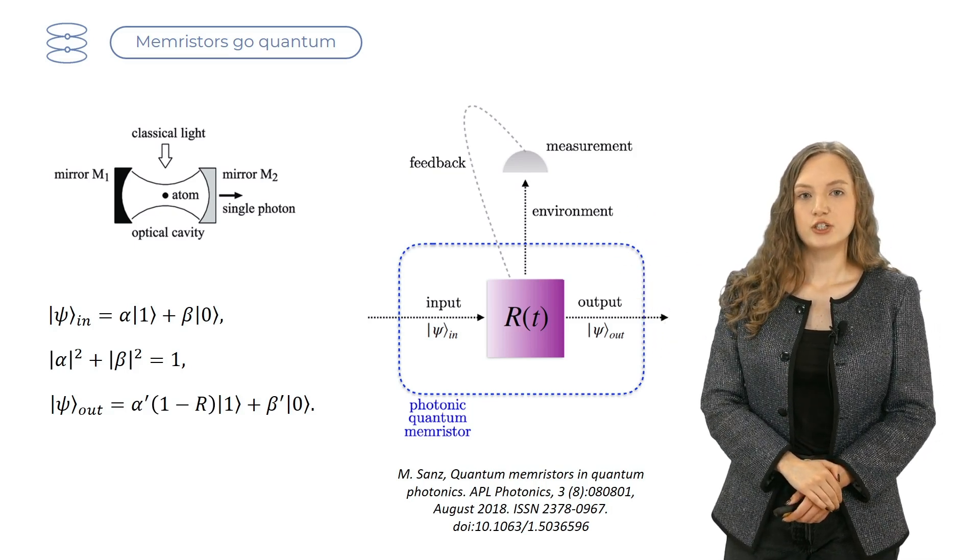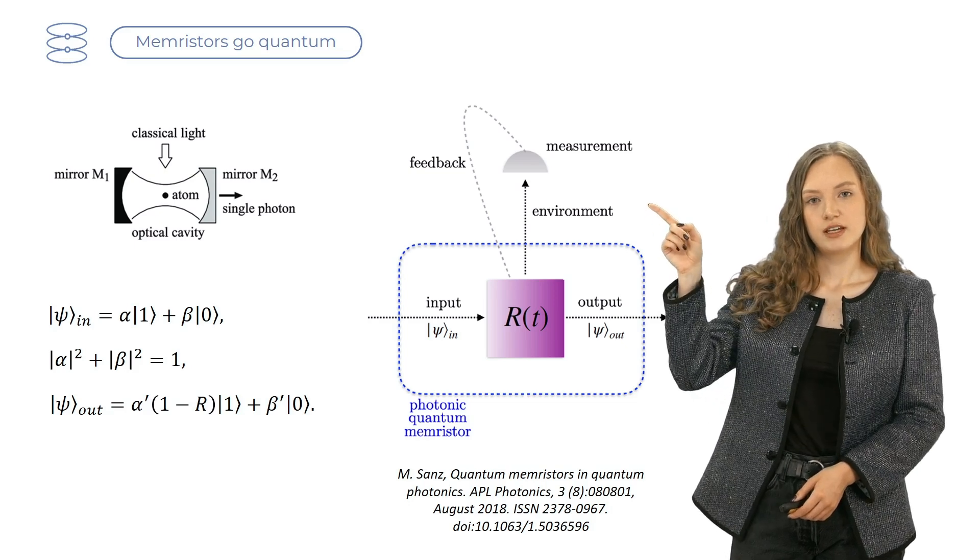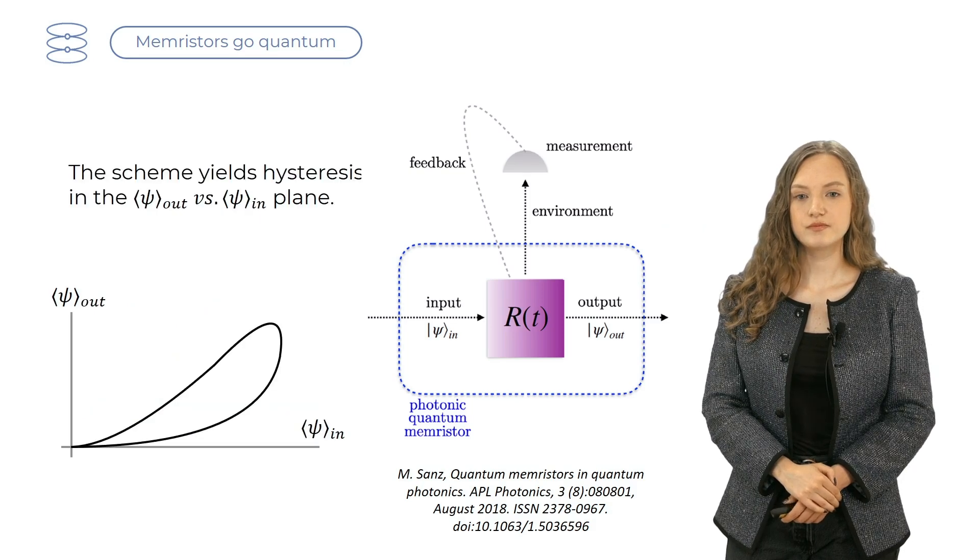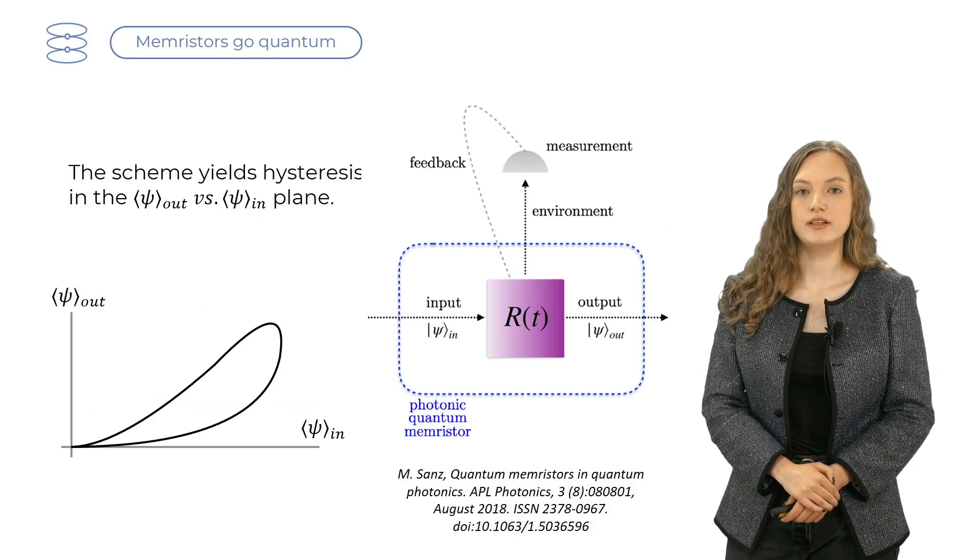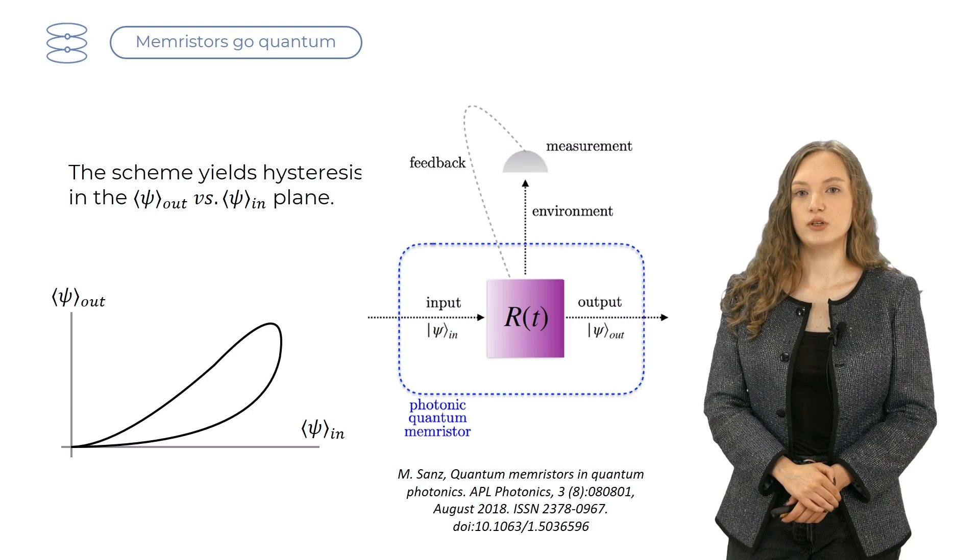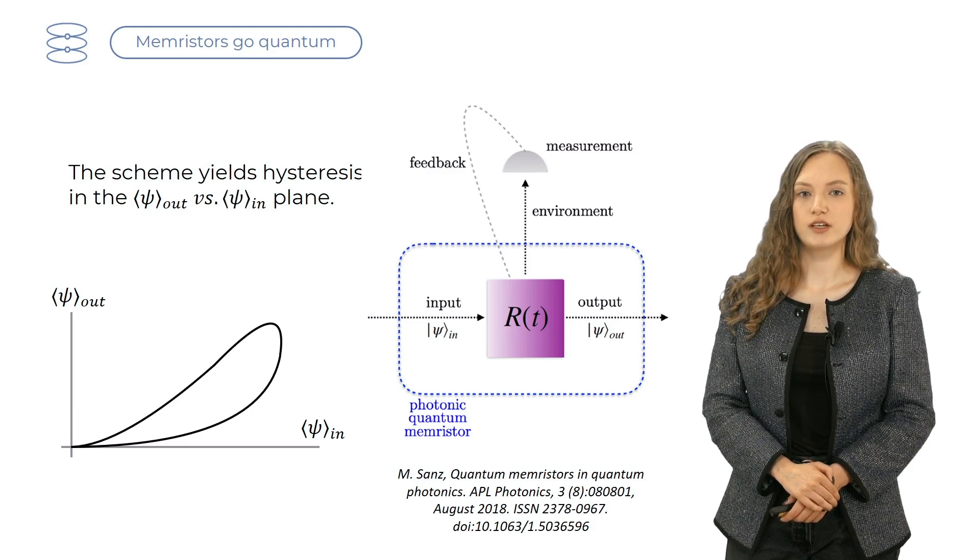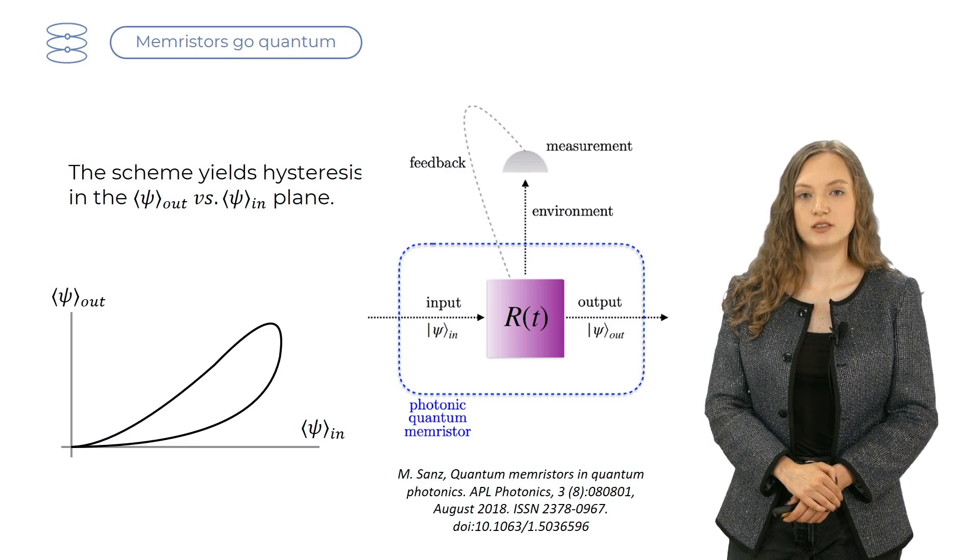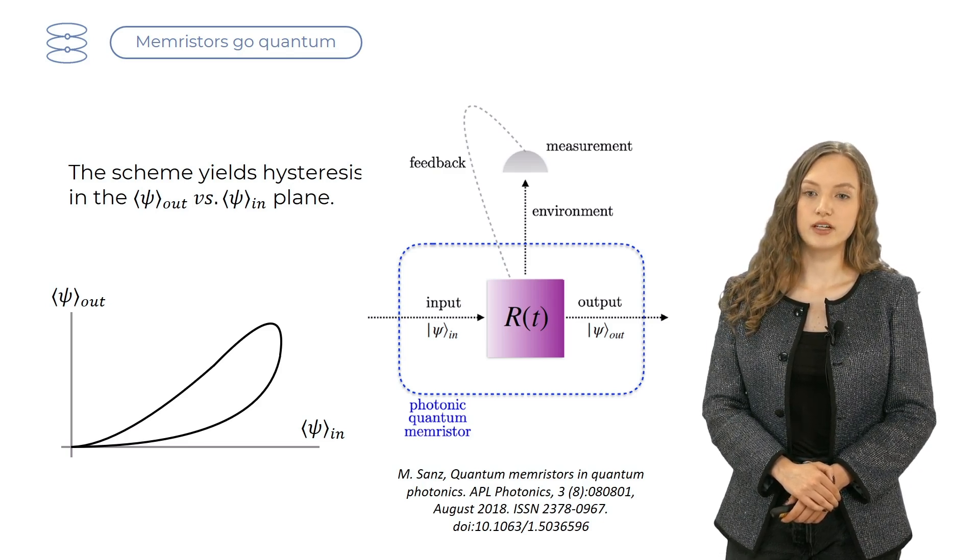A detector measures reflected photons, and the measurement results are used to change reflectivity r. As it turns out, this scheme yields hysteresis if one plots the average number of photons for the input state versus the average number of photons for the output state, which confirms that this device possesses memory.